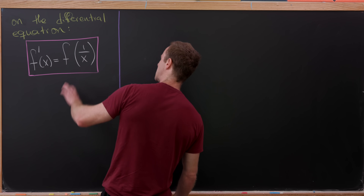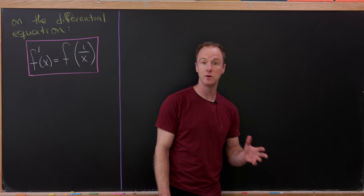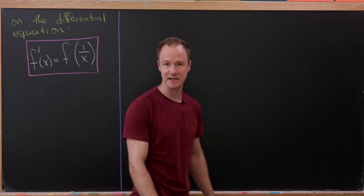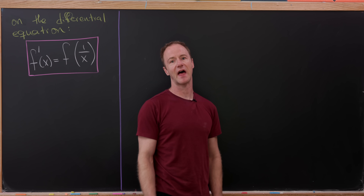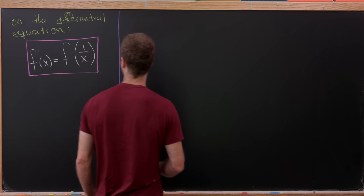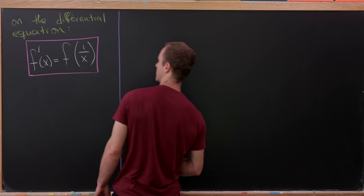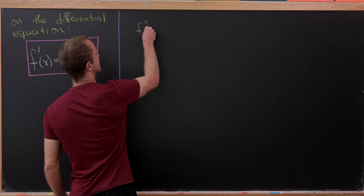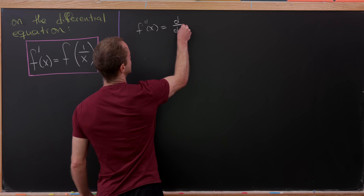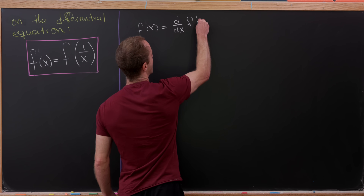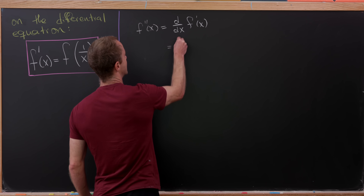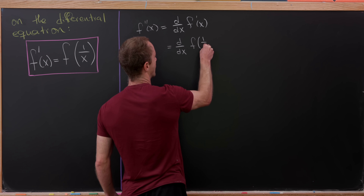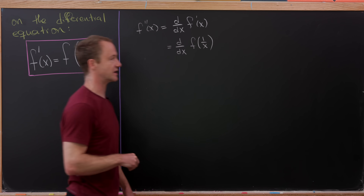Let's be inspired by the fact that if we compose the function 1 over x with itself we get back to the identity, and try to build that into this situation. We can do that by taking the derivative of this entire equation, which gives us f double prime of x. That's equal to the derivative of f of 1 over x — we're just using our differential equation.